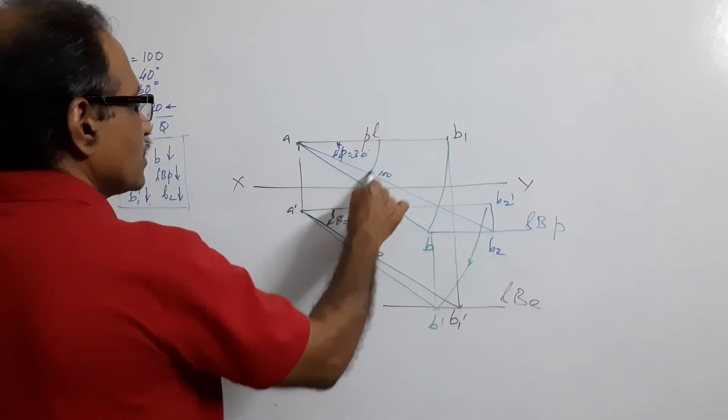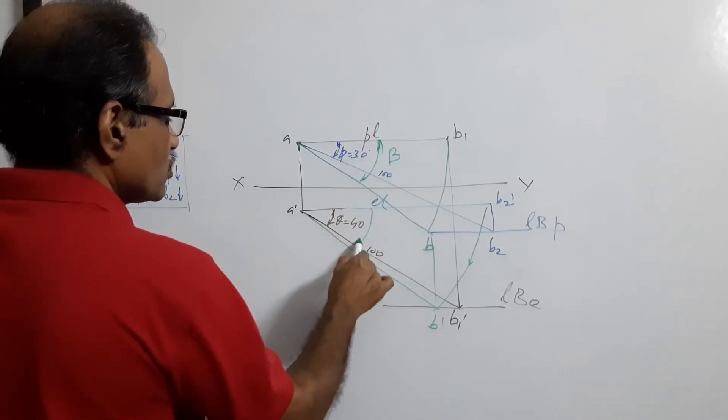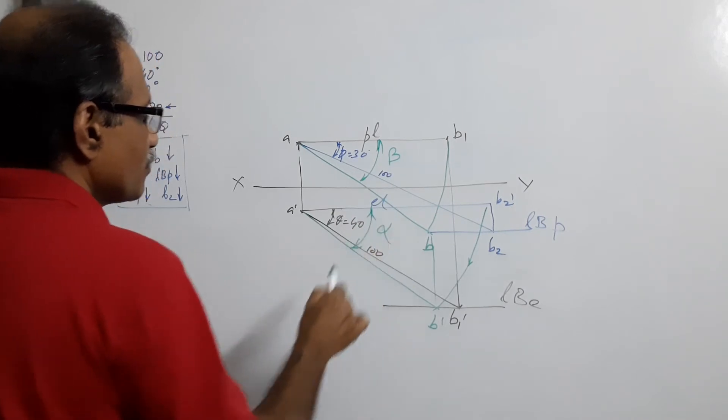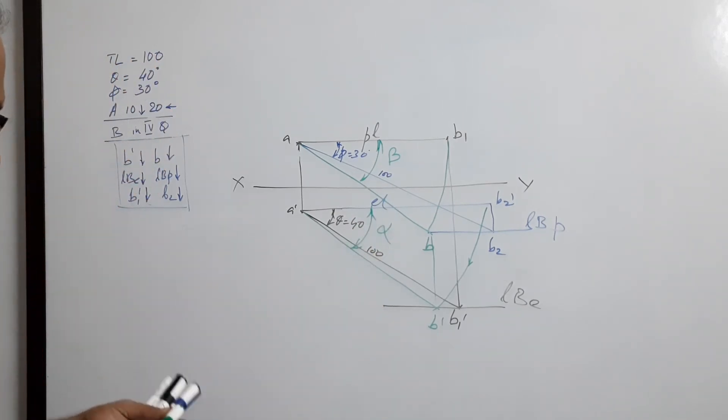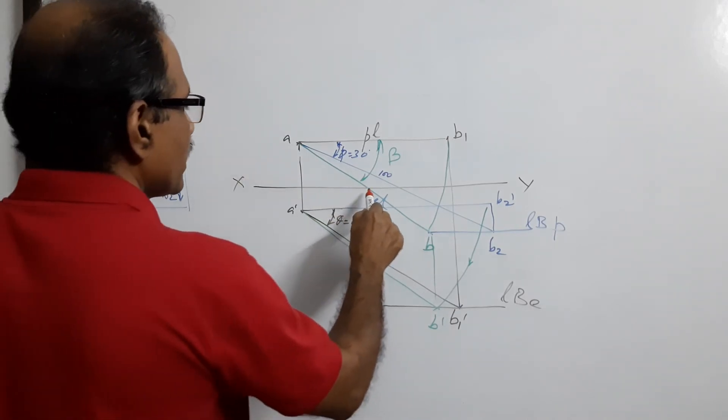This is what beta, this is what alpha. You have to find the traces. In this case, plan cuts XY at V.